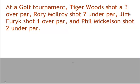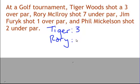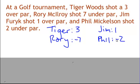For example, at a golf tournament, Tiger Woods shot 3 over par, Rory McIlroy shot 7 under par, Jim Furyk shot 1 over par, and Phil Mickelson shot 2 under par. If you're not familiar with golf, over means positive numbers and under means negative numbers. So Tiger was at 3, Rory at negative 7, Jim at 1, and Phil at negative 2.